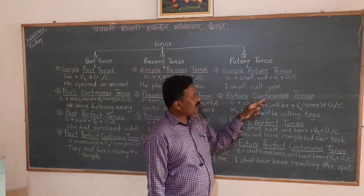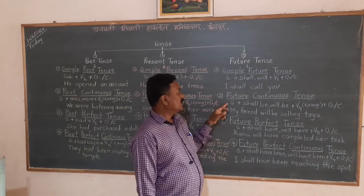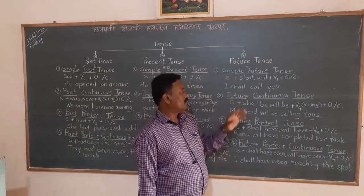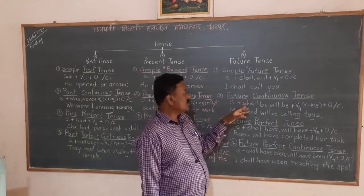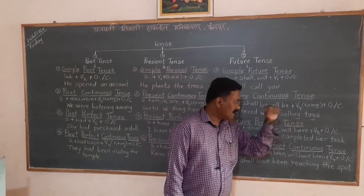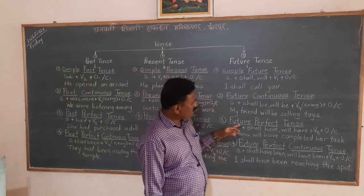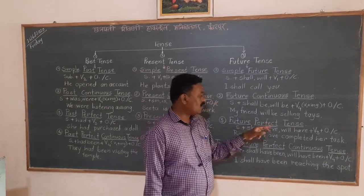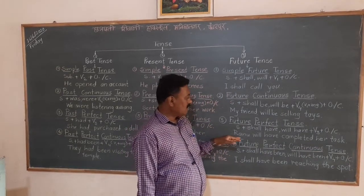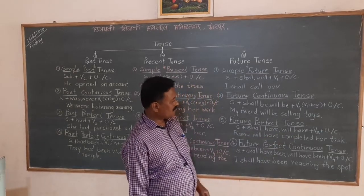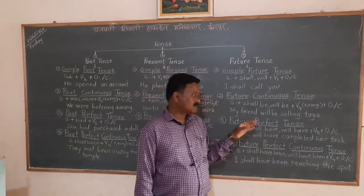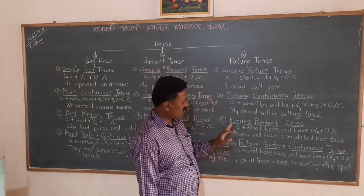Second, future continuous tense: the formula is subject plus shall be/will be plus V4 plus object or complement. The same distribution of auxiliaries applies according to the subject. Example: 'My friend will be sailing toys.' Third, future perfect tense: subject plus shall have/will have plus V3 plus object or complement. Example: 'Ranu will have completed her task.' The action will be totally completed in the future.